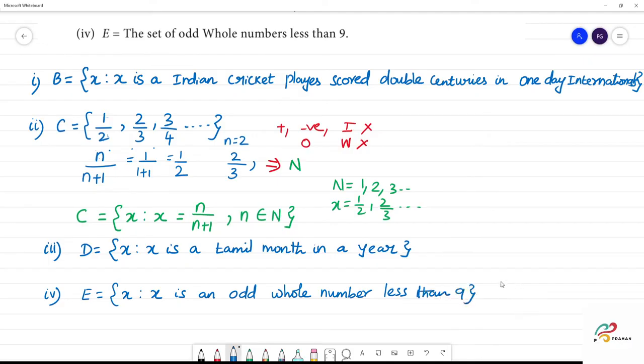We write it is equal to x such that x is less than 9. So x is odd whole number, and then x is less than 9. We will use this symbol. So X is odd whole number and X is less than 9.